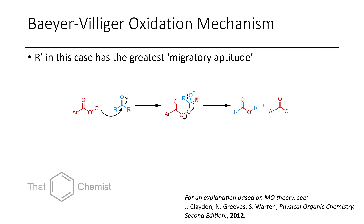It's worth noting that while the stability of the R-prime group as a carbocation guides selectivity, this isn't truly a carbocation — it's a species with an electron pair adjacent to a negatively charged group. For a full explanation, there's a good description in the Clayden physical organic chemistry textbook; a link is provided in the description below. This mechanism applies only to 1,2-addition to carbonyls, not epoxidation.